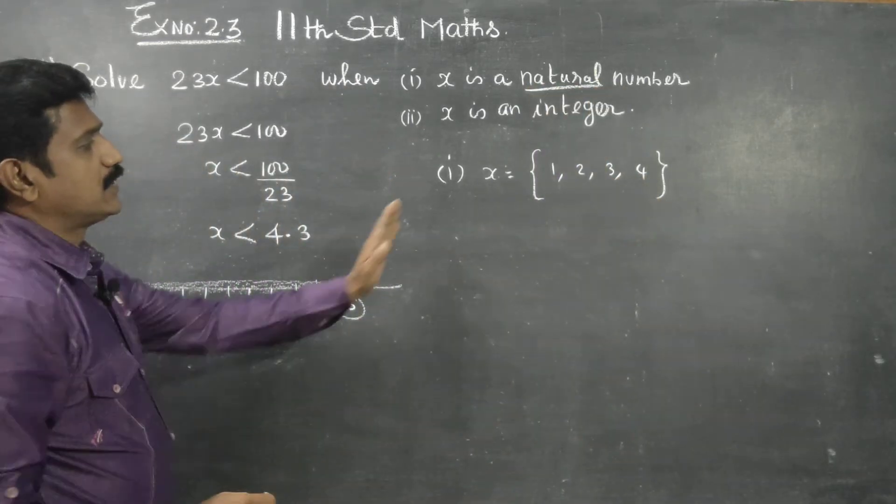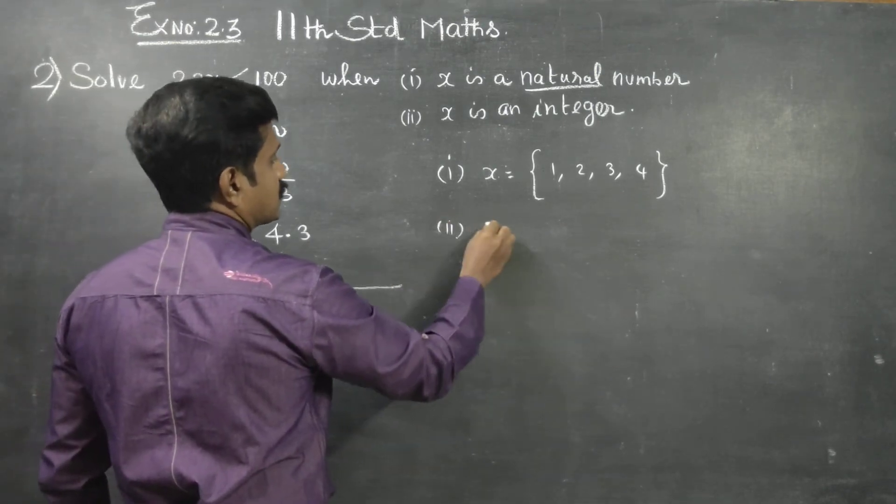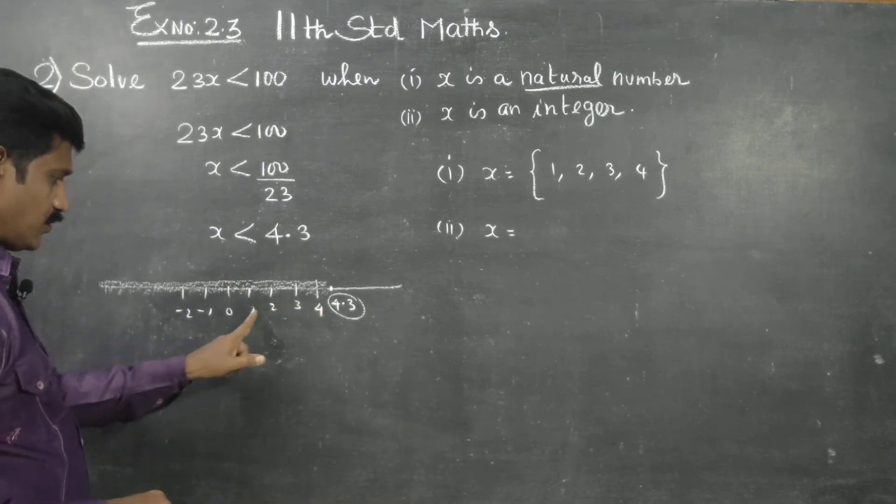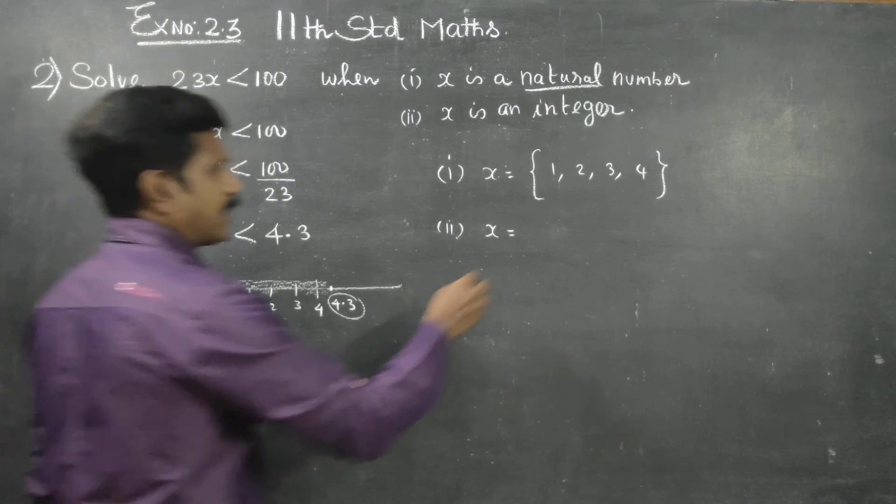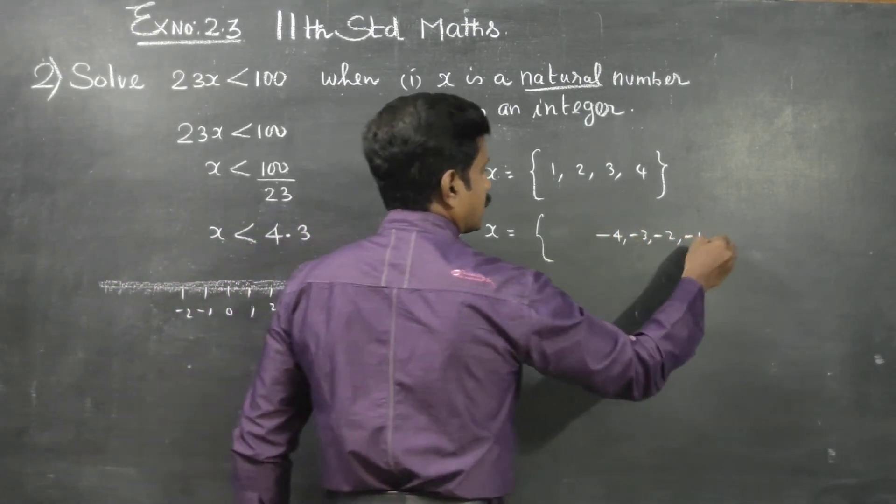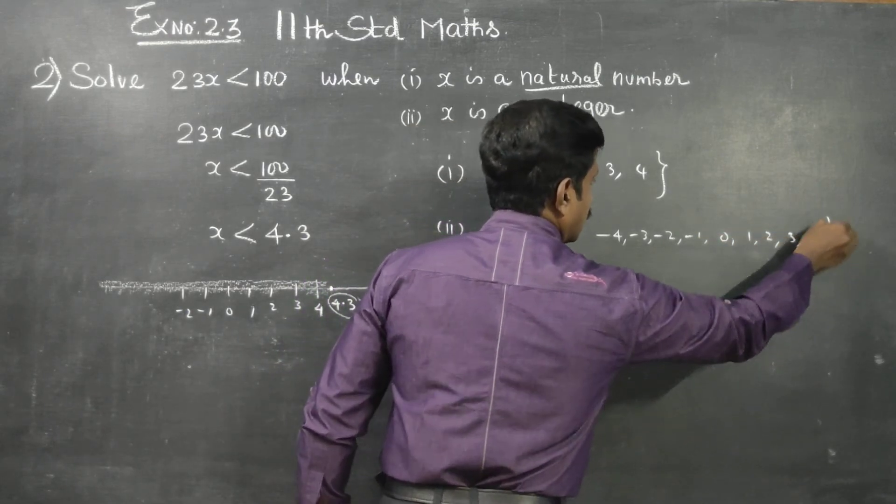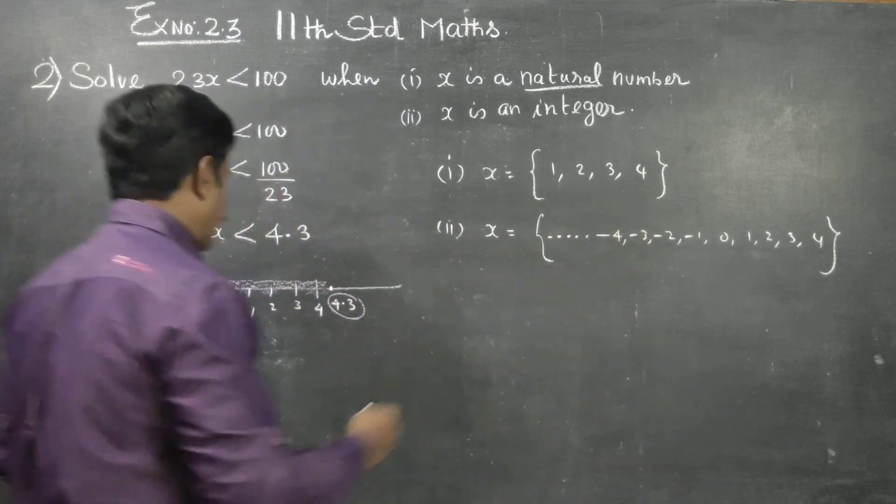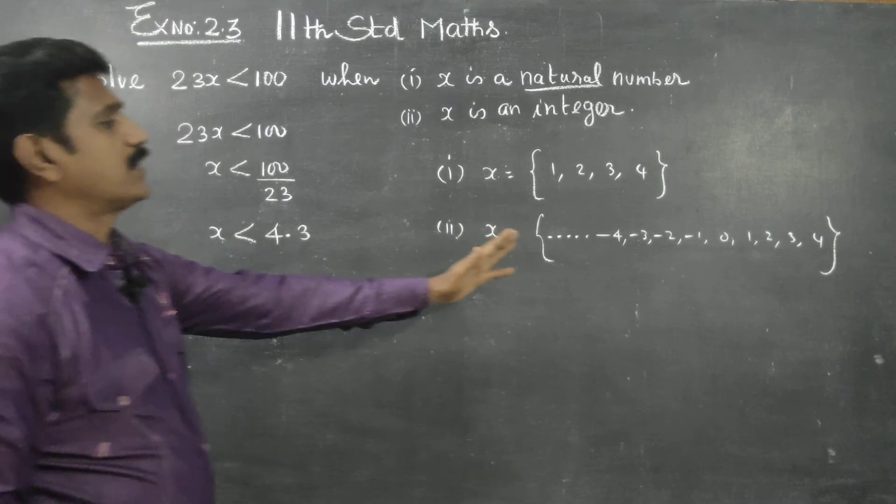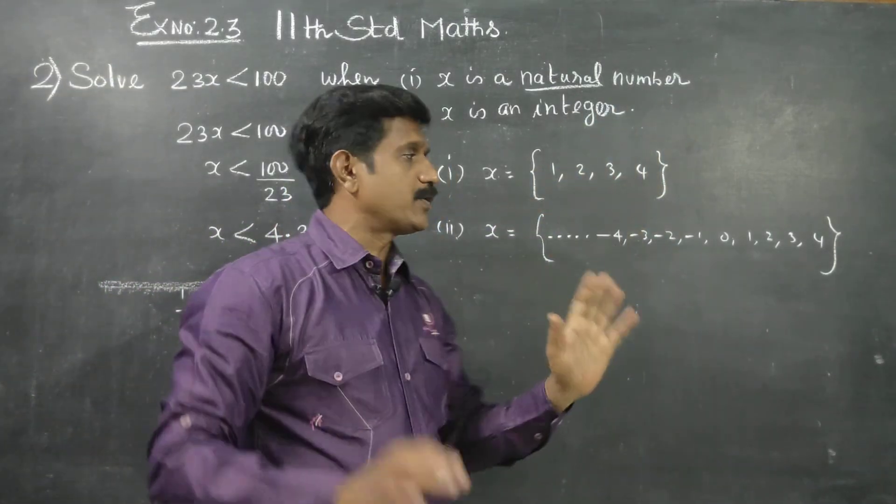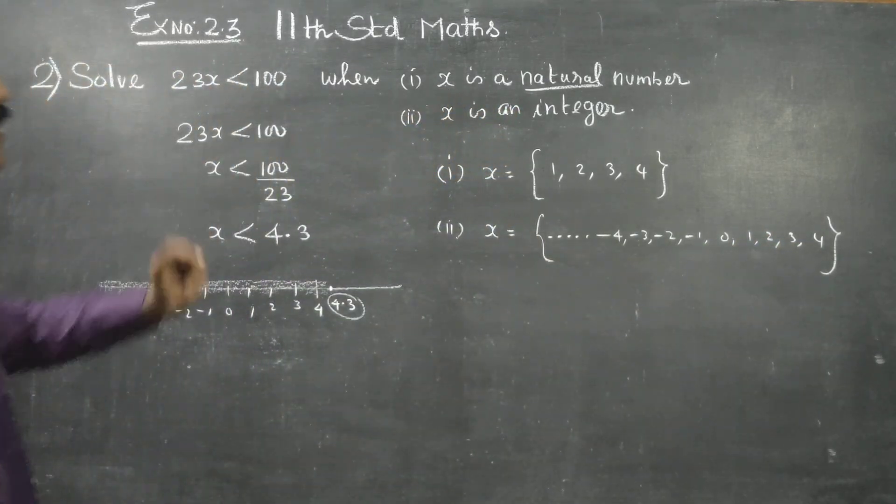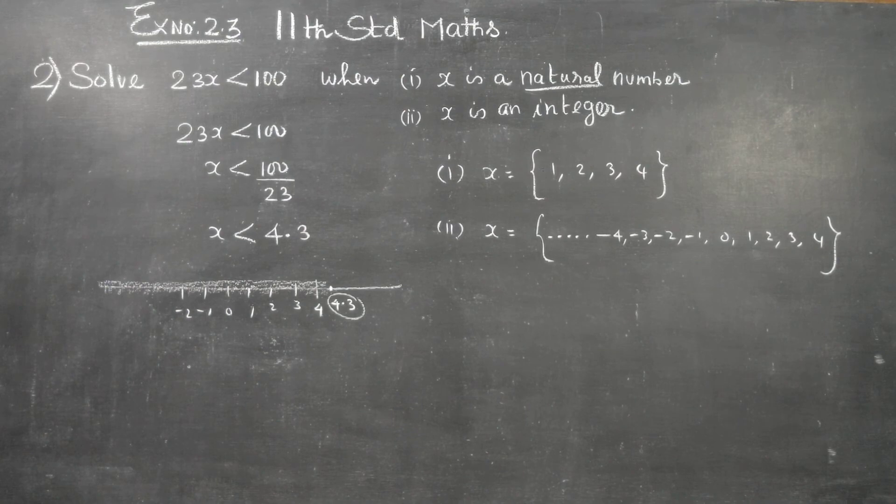When x is an integer, the solution is ..., -4, -3, -2, -1, 0, 1, 2, 3, 4, and so on. For natural numbers only, the solution is 1, 2, 3, 4. Integers differ from natural numbers.